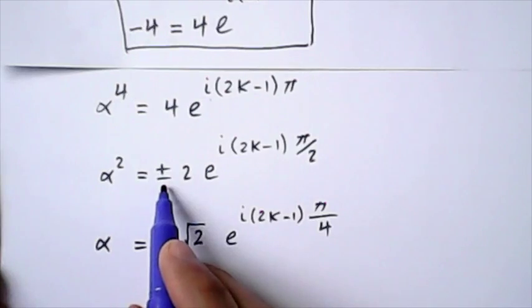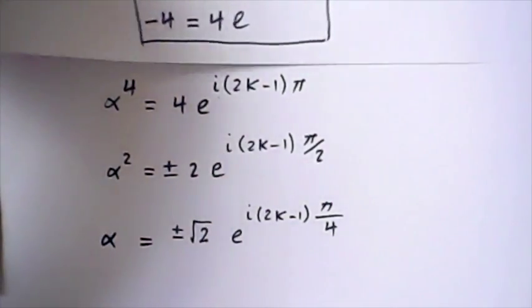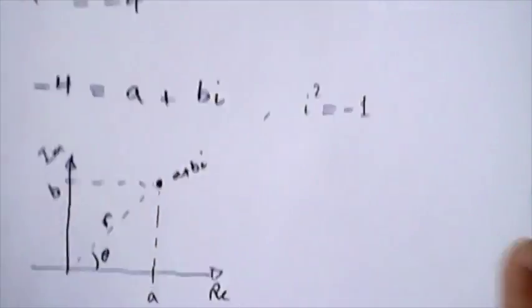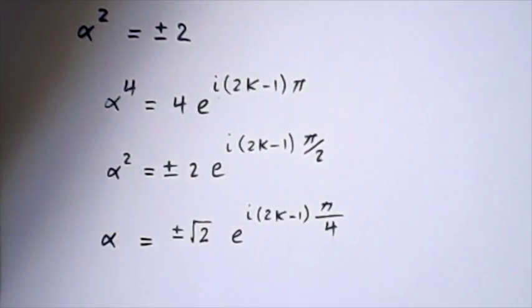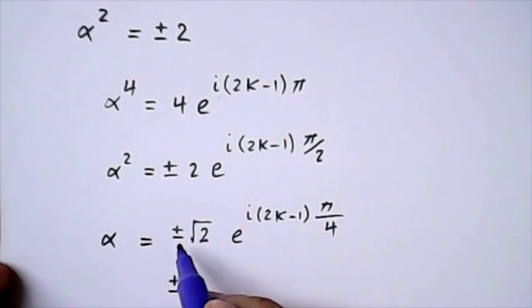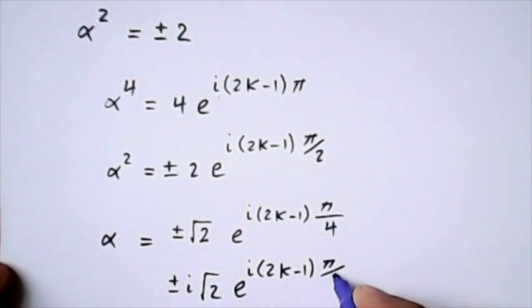So minus 1 is equal to i to the power of 2. You can remember that was the definition. So the square root of i to the power of 2 is i. So I'll have plus and minus i, because of the minus 1 here, square root of 2, e to the power of i times 2k minus 1 times pi divided by 4.